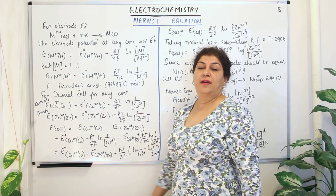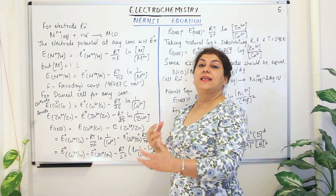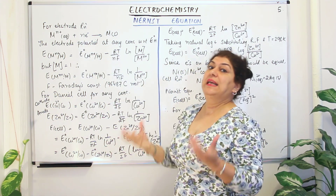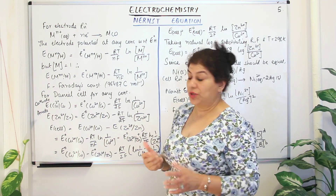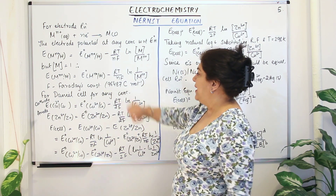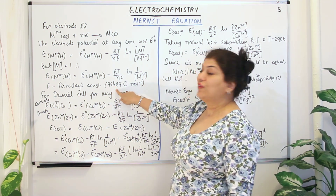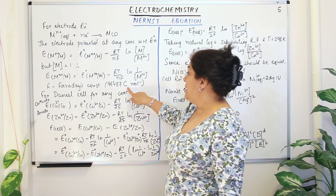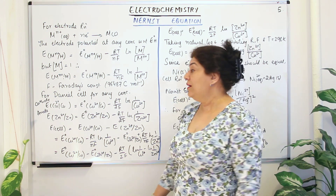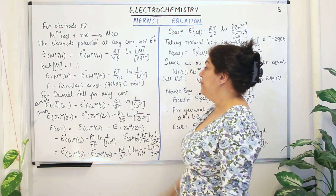What is R here? R is the gas constant. What is N? N is the number of electrons that have been transferred in this process — the number of electrons gained since we are talking of reduction potential. F is Faraday's constant and the value of Faraday's constant is 96,487 coulombs per mole.